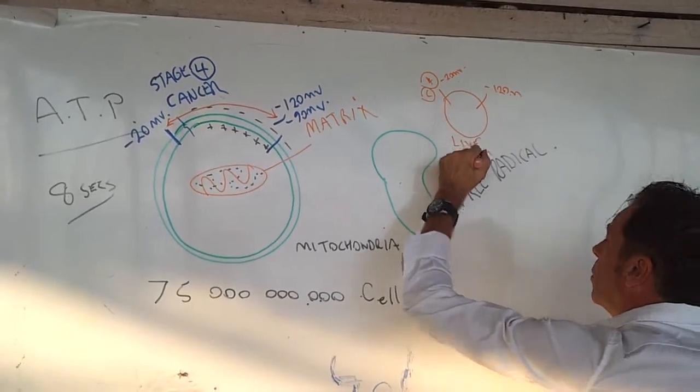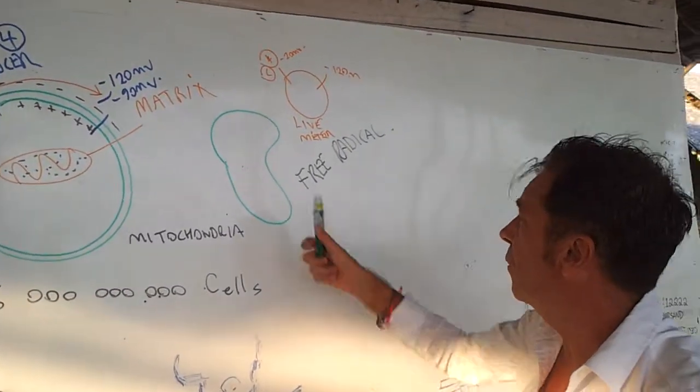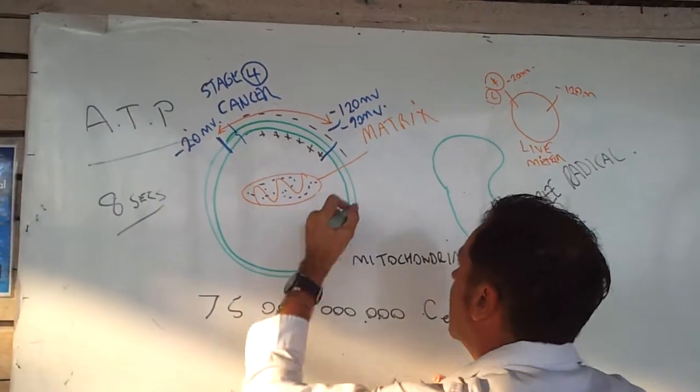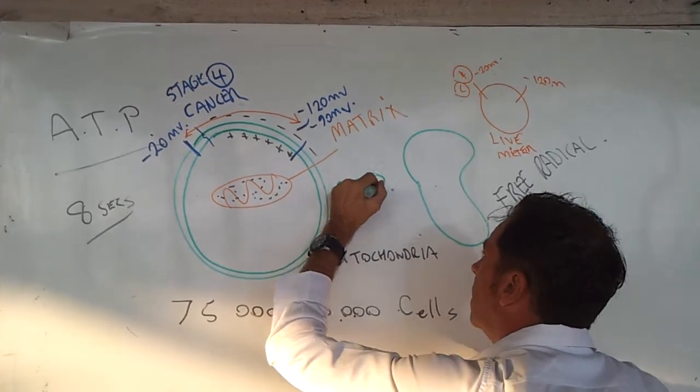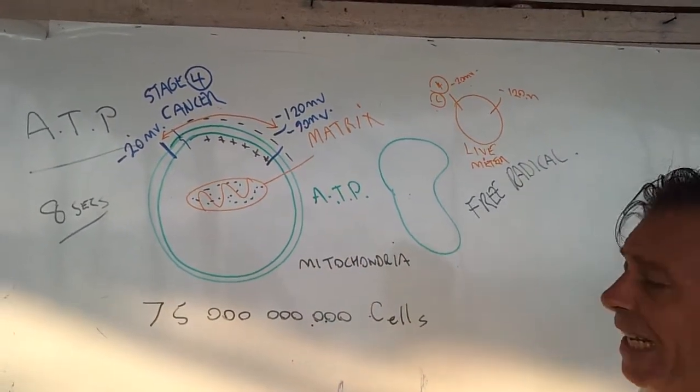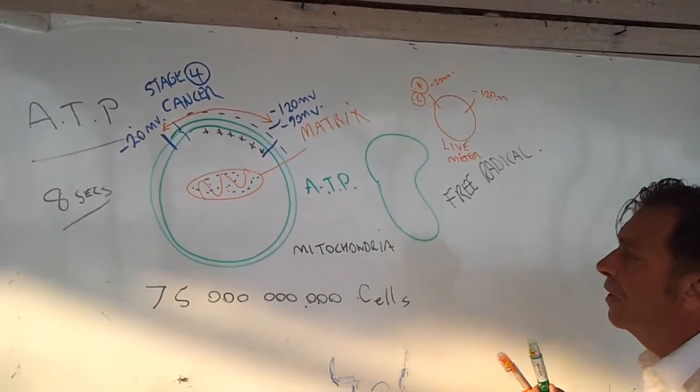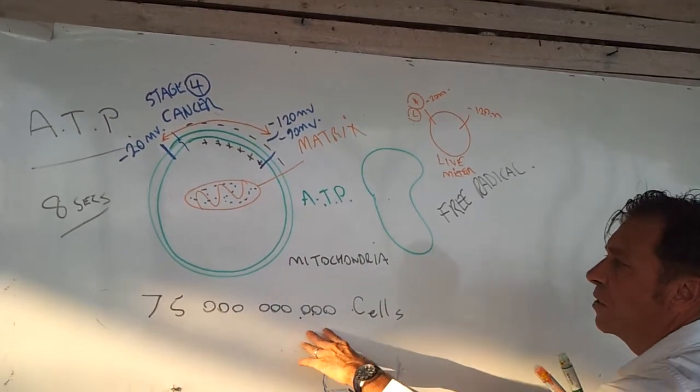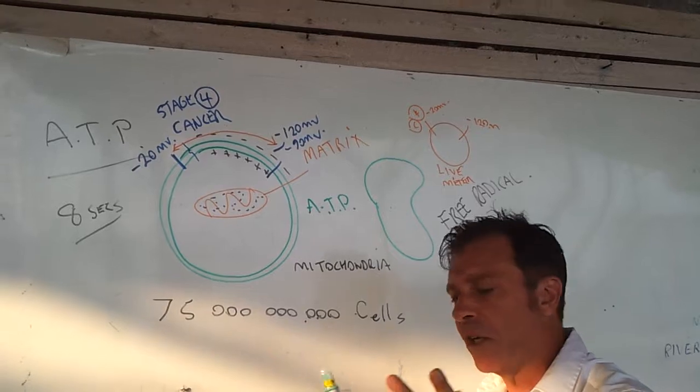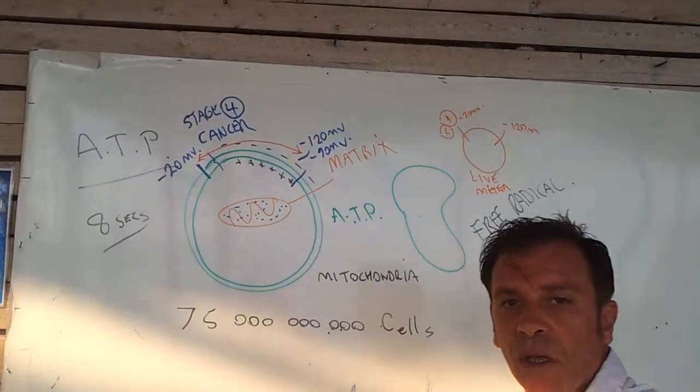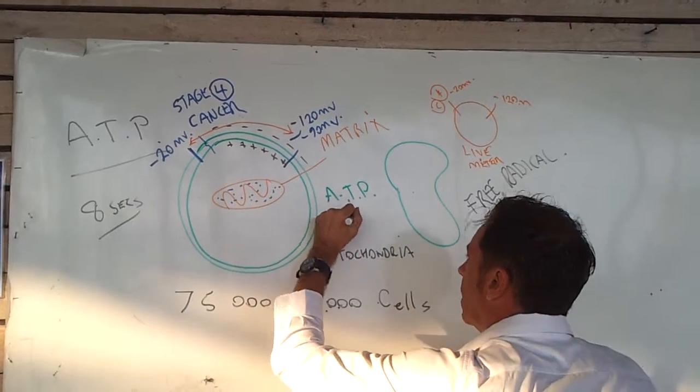So stage 4 cancer here is minus 20 millivolts on the cell's membrane, and super healthy is minus 120 millivolts. This is what I call my life meter. Now we're talking electrons and basically free radicals and disease, we need to make this ATP. This ATP, adenosine triphosphate, is very important in making energy to run your heart and run your liver, breathing, talking, everything. So 75 trillion cells have to make ATP every 8 seconds, and then it goes to something called ADP, which is the lactic acid that sports people get.